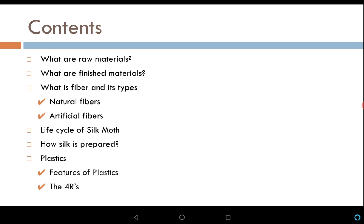Then we will talk about plastics — the classification of plastics and their details — and the features of plastics which make them unique. Though they are harmful for the environment, they have some unique features which help us. Next we will talk about the four Rs: reduce, reuse, recycle, and recover. We already knew there are three Rs, but here we include one more — recover. We will discuss all of them in great detail.